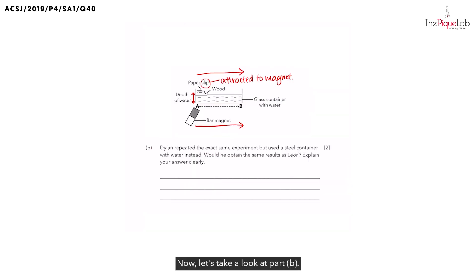Now, let's take a look at part B. Dylan repeated the same exact experiment, but this time, instead of using the glass container from earlier, he decides to use a steel container with water instead. Do you think he would observe the same results as Leon? Explain your answer clearly. Now, what we're doing is changing the glass container to steel. And students know that steel is a magnetic material.